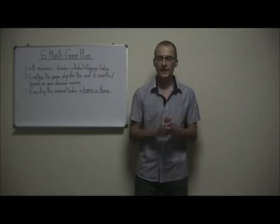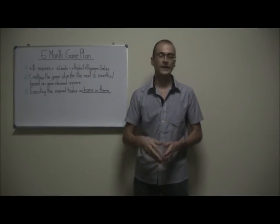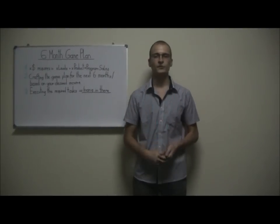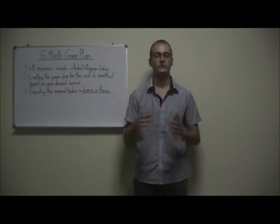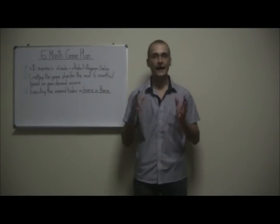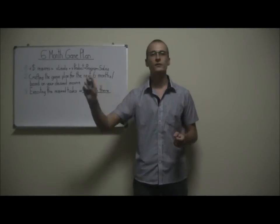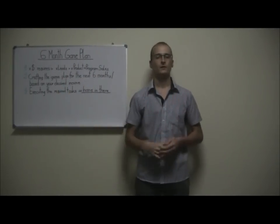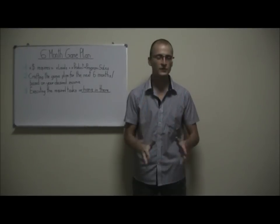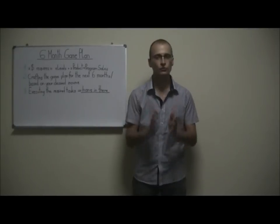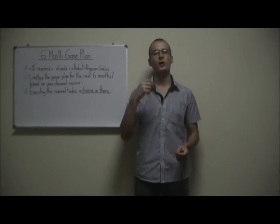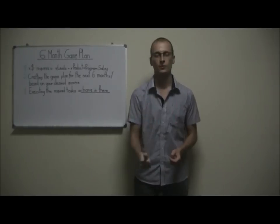Your game plan may look like this. For the next six months, I'm just going to create one to two products each month consistently. This is my goal and I'm doing that because I want to make $2,000 a month. I'm just going to invest maybe 10 to 20 hours a month to create more information products, to launch one coaching program a month.